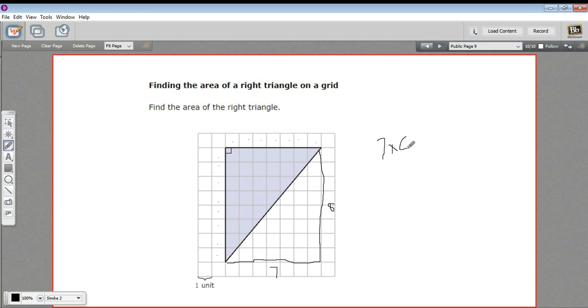So the rectangle would have an area of 56. When you cut a rectangle with a diagonal like this, it cuts it in half. So to figure out the area of this triangle, we just have to take 56 and divide it by two, and we've got 28 units.